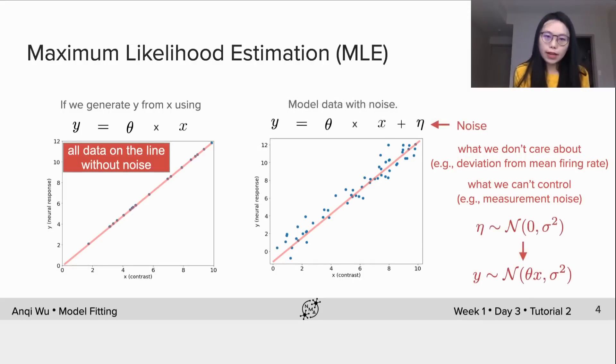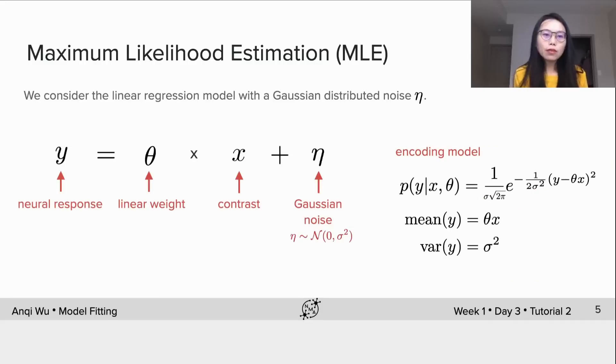So when we do model fitting, we want to take noise into consideration, thus we add an additional term eta to the linear model. This eta is not a deterministic value, we usually assume it's a random variable from a Gaussian distribution. When eta is from a Gaussian with zero mean and sigma squared variance, y would be a random variable from a Gaussian distribution. The mean of this Gaussian is at theta multiplying x.